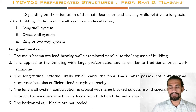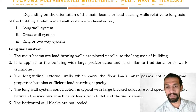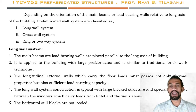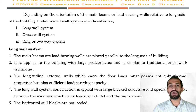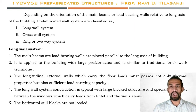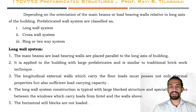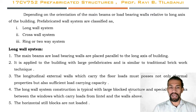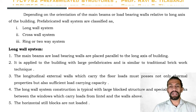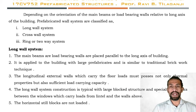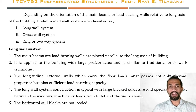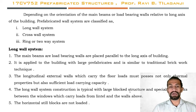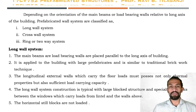In the long wall system, main beams or load bearing walls are placed parallel to the long axis of the building. It is applied to buildings with large prefabrication units and is similar to the traditional brickwork technique. Longitudinal external walls carrying floor loads must possess not only thermal properties but also sufficient load-carrying capacity. Construction uses large block structures with special pier blocks between windows carrying loads from lintels and the wall above.